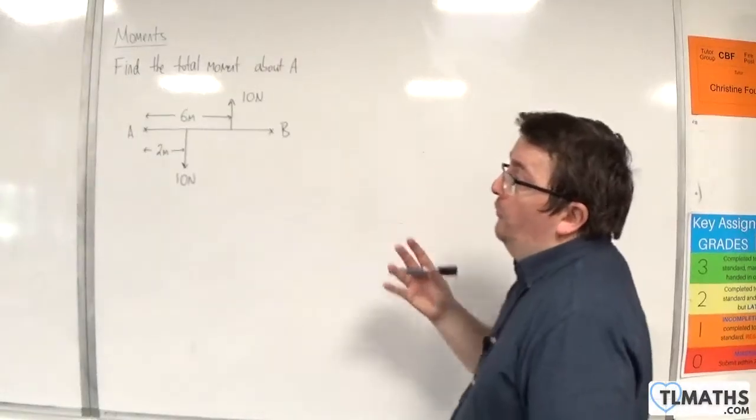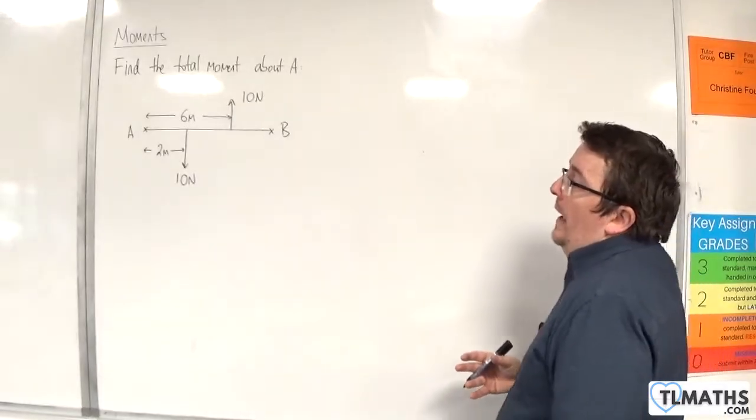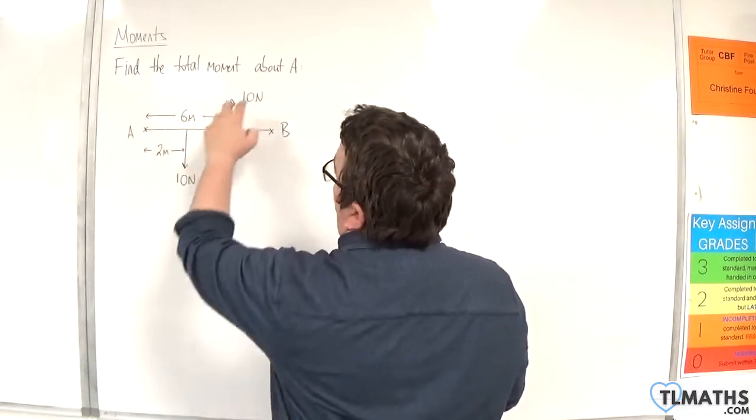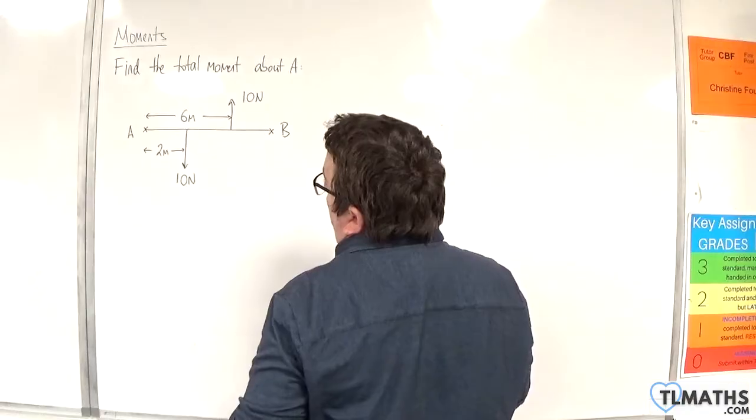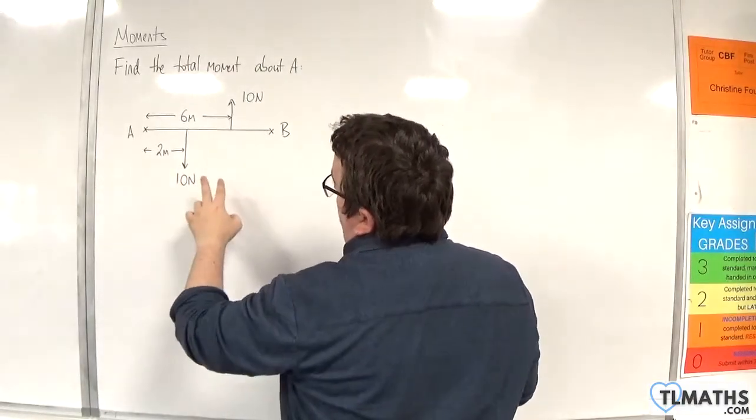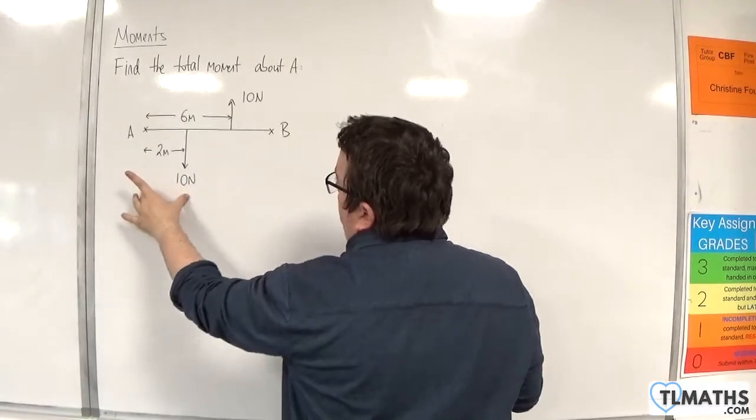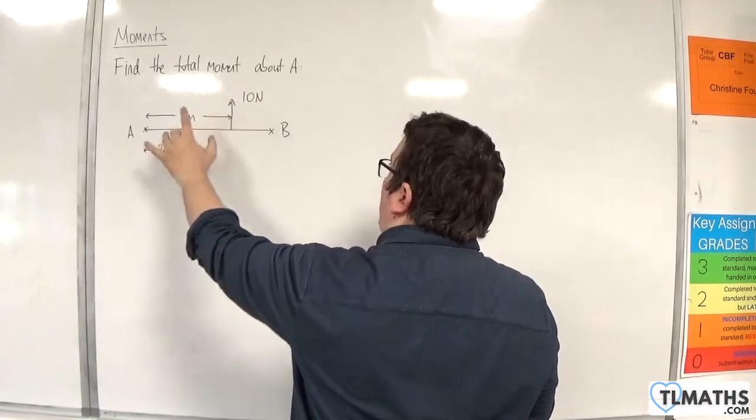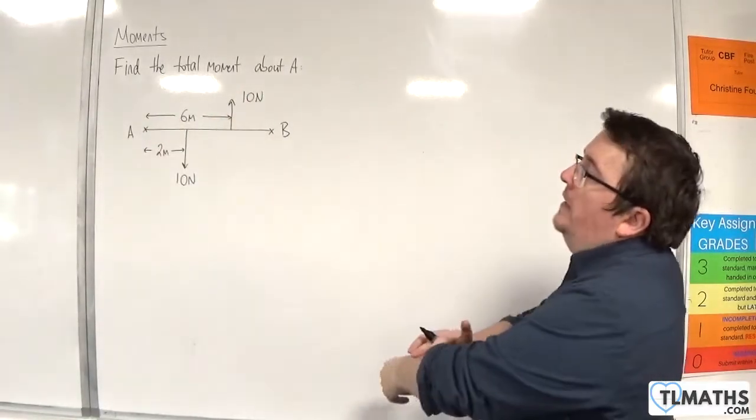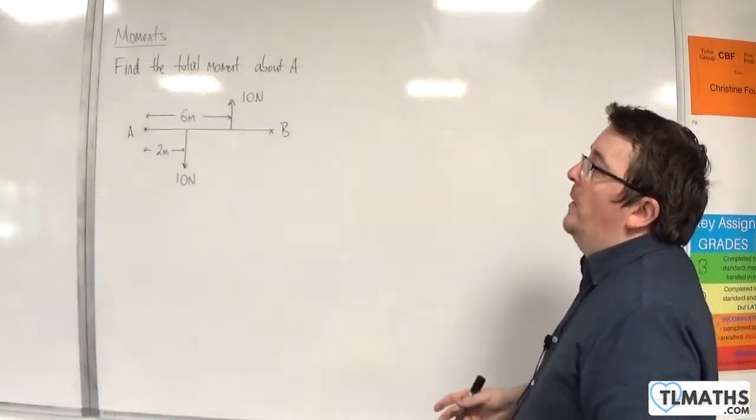In this video, we have a horizontal rod AB, and we have two 10-Newton forces being applied to the rod, but they are working in opposite directions. The 10-Newton force here is 2 metres away from A, and the 10-Newton force here is 6 metres away from A, and we want to find the total moment about A.